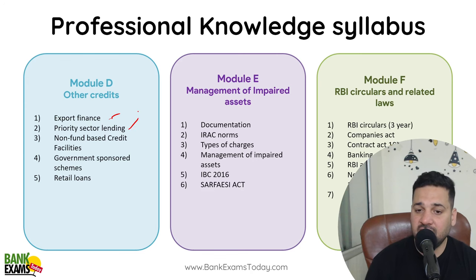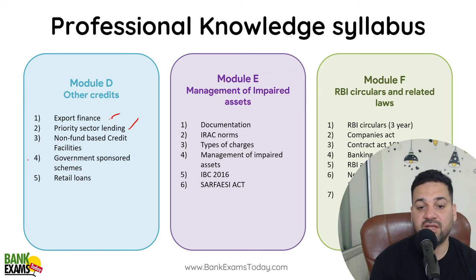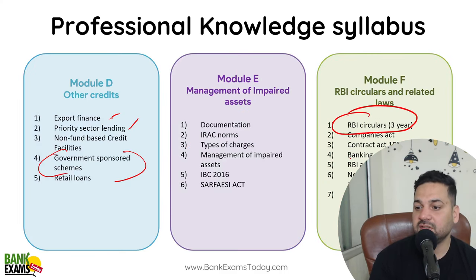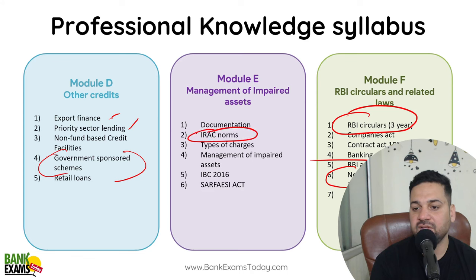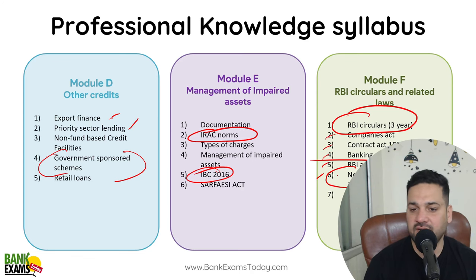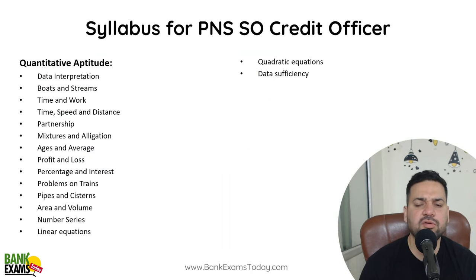Financial Management (FM) is important. Export finance, priority sector lending (an RBI guideline), non-fund based credit facilities, and government sponsored schemes are very, very important. Then ratio analysis, RBI circulars, negotiable instruments act — these are very important. IRAC norms are very important. IBC is very important. Laws such as the Negotiable Instrument Act, RBI Act, Banking Regulation Act, and Contract Act are very important. Management of impaired assets, types of charges, and documentation are also very important topics.